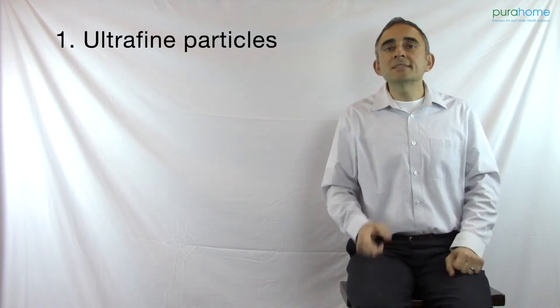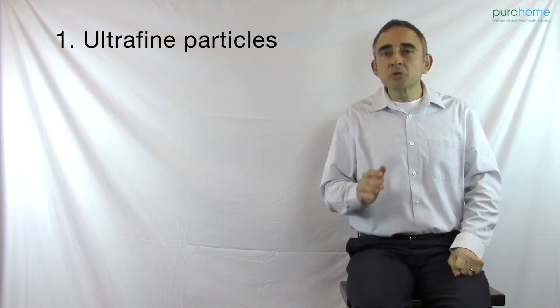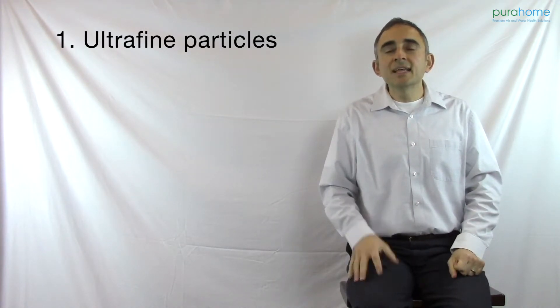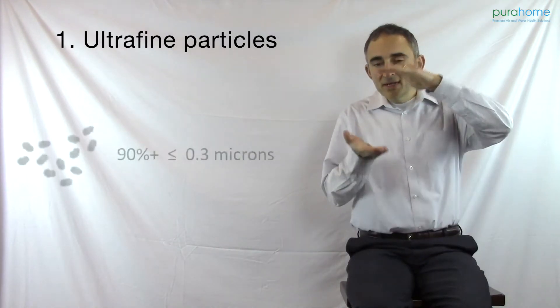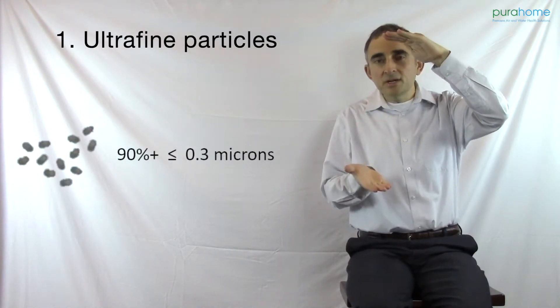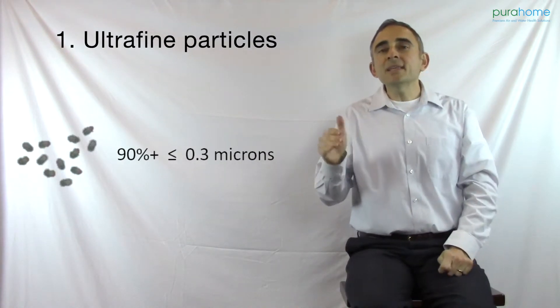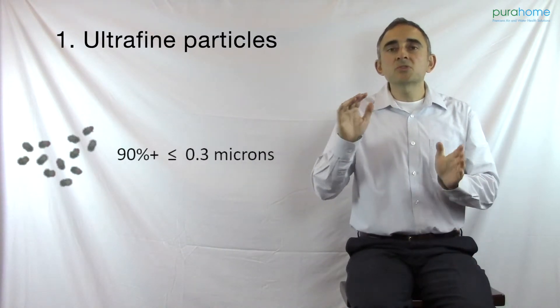What we look for in a very good air cleaner is we look at the design, and the first rule is how does this air purifier remove ultra-fine particles. That is the key. The majority of particles in your air, over 90% of what's in your air, is ultra-fine, meaning it's 0.3 microns or smaller.